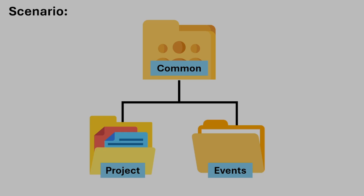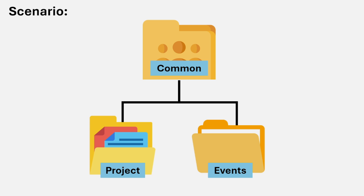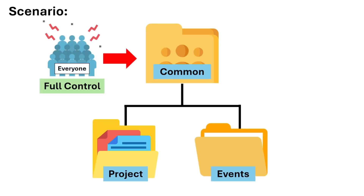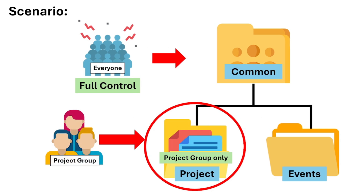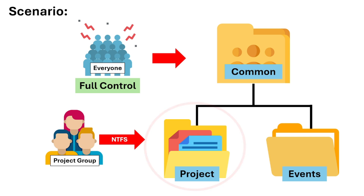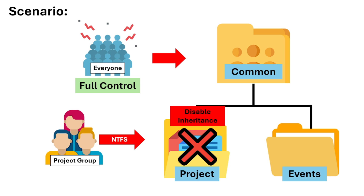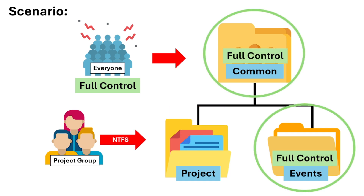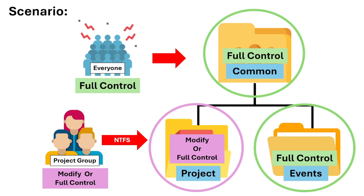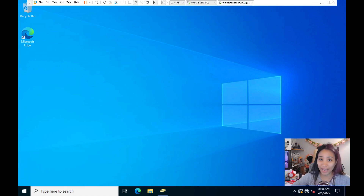To apply the concepts of effective permissions and inheritance, here are the scenarios we'll practice in our home lab. For the first scenario: there is a Common folder with full control for everyone on the network, and its subfolders inherit those full control permissions. The Project group needs access to only one subfolder called Project. To achieve this, apply NTFS on the subfolder to restrict access — disable inheritance from the Project subfolder, remove the Everyone permissions, and give Modify or Full Control permissions to the Project group for that subfolder only.